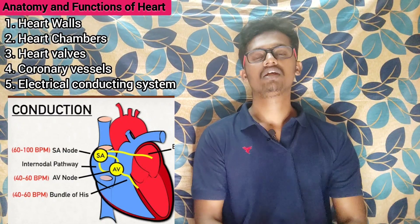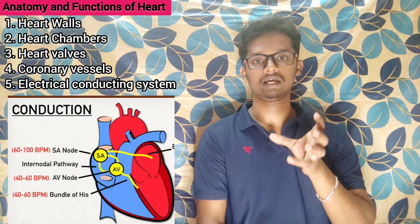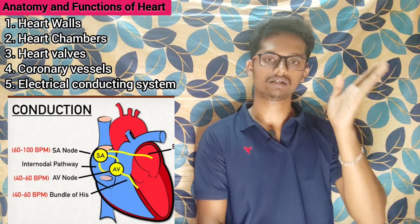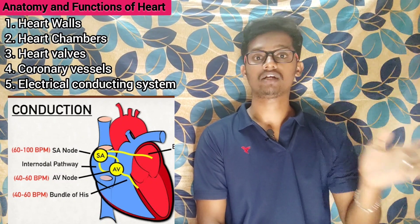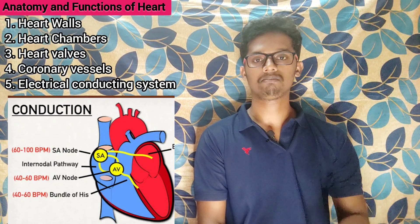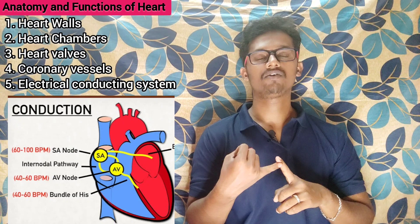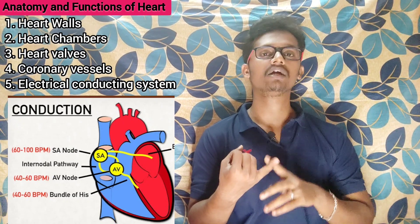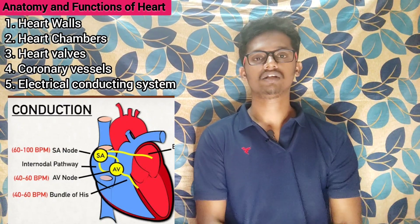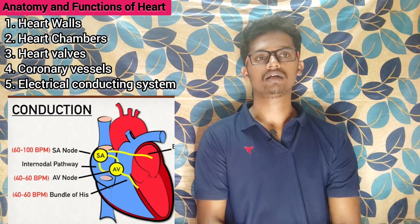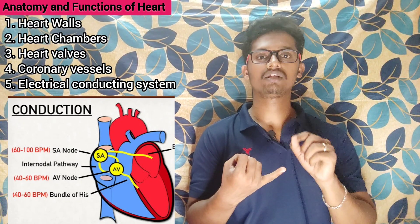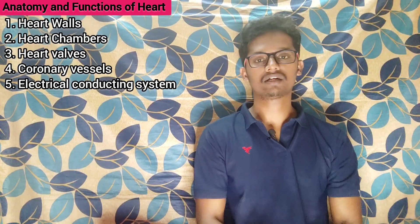The second one is the AV node. It carries the electrical impulses from the upper part of the heart to the lower part of the heart — that's why it acts as a connection point. So there are two nodes: the SA node creates the electrical impulse and the AV node carries it out. This is the electrical conducting system of the heart, which maintains our heartbeat and rhythm.